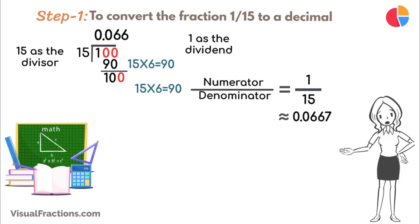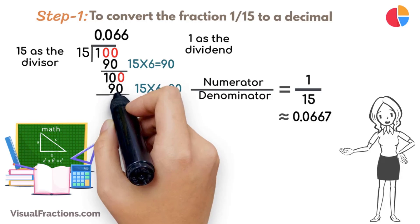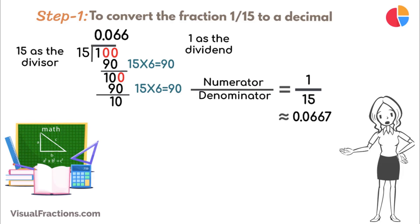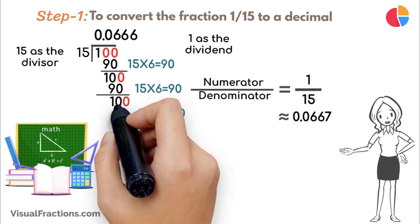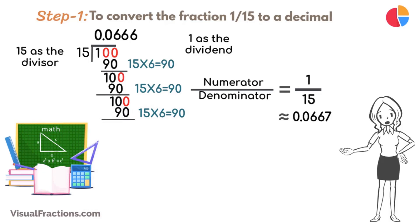Multiply 15 by 6 to get 90, and subtract this from 100, leaving a remainder of 10. This pattern continues with the remainder consistently returning to 10, leading to the same calculation each cycle. Each cycle confirms the repeating nature of the decimal, which extends at 0.0667.